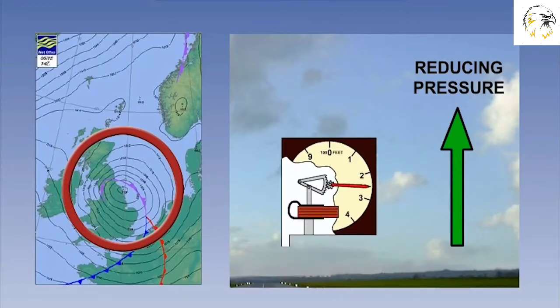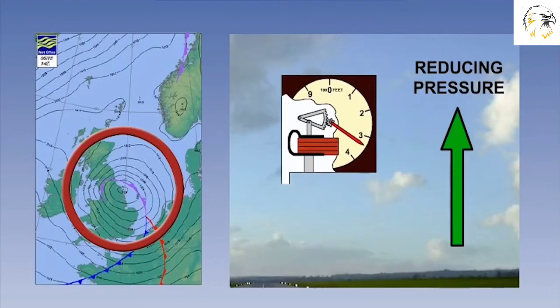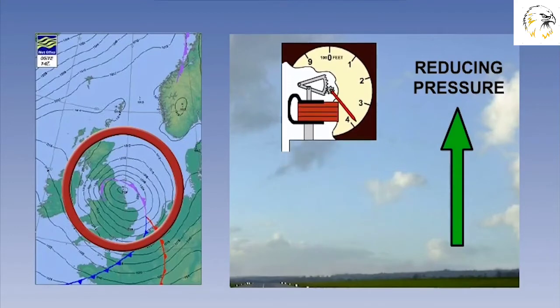As pressure is reduced with height through the atmosphere, the altimeter will read a higher value. As you can see, pressure is fundamental to meteorology and aviation. This lesson aims to give you an understanding of pressure in our atmosphere and its significance to us as aviators.